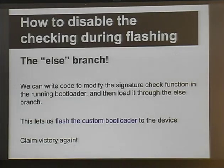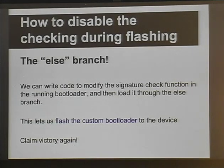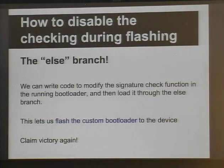Using that, we can write some code that will run and disable the checks in the current bootloader. Then when you put the phone into download mode, all the security checks are gone, and the bootloader will let you flash our new custom bootloader to the device without any issues. Here we can claim victory because we've been able to install our own custom bootloader that now requires no modification to the kernel when you boot. You can take the compiled kernel and immediately throw it on your phone and it'll run.